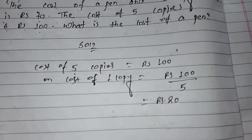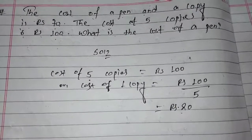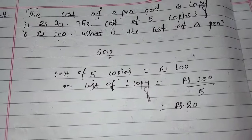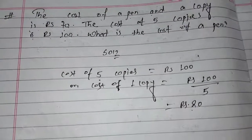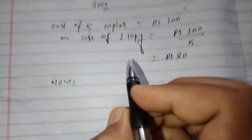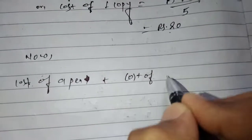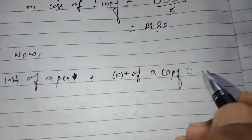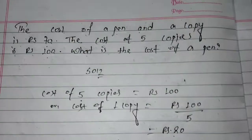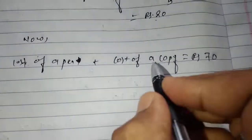Now we know the cost of one copy is 20 rupees. Now for one pen: the cost of a pen plus the cost of a copy equals how many? One pen and one copy together are 70 rupees.